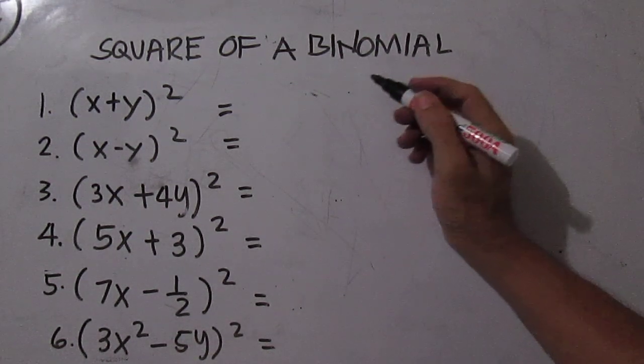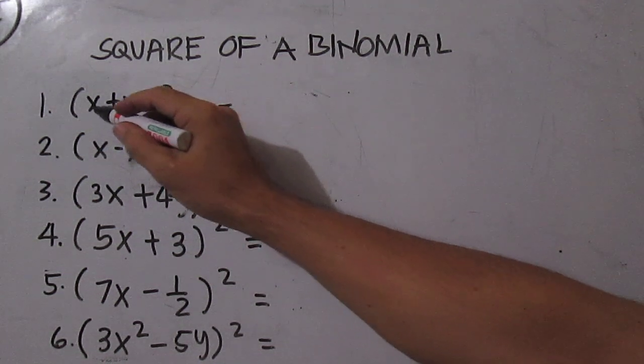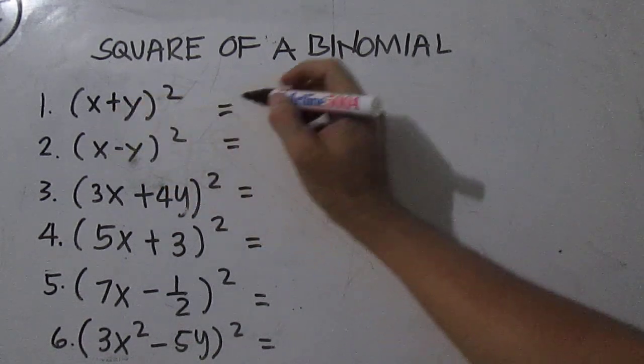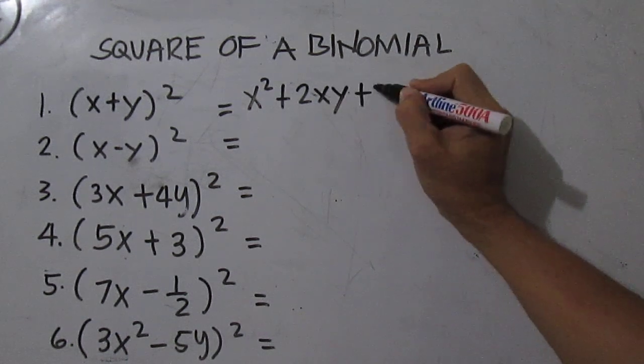The square of a binomial consists of the square of the first term, twice the product of the first and the second term, and the square of the second term. Number one is just x squared plus 2xy plus y squared.